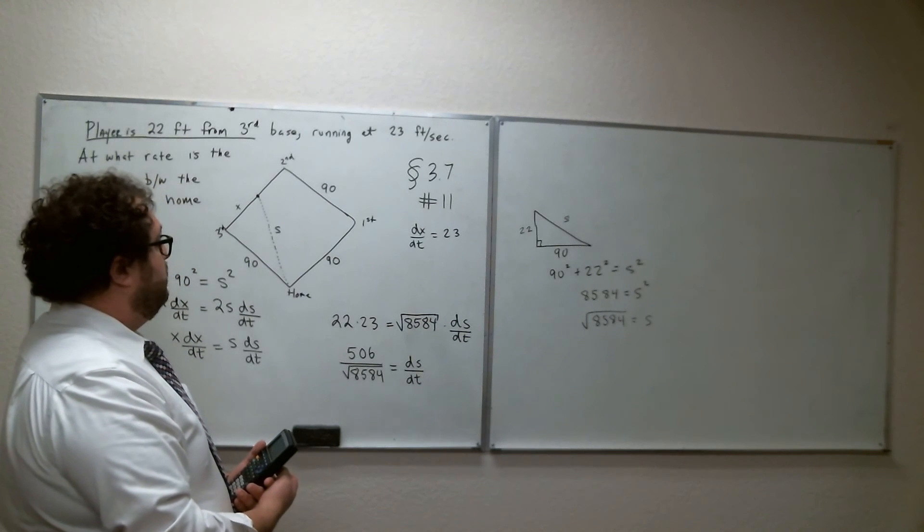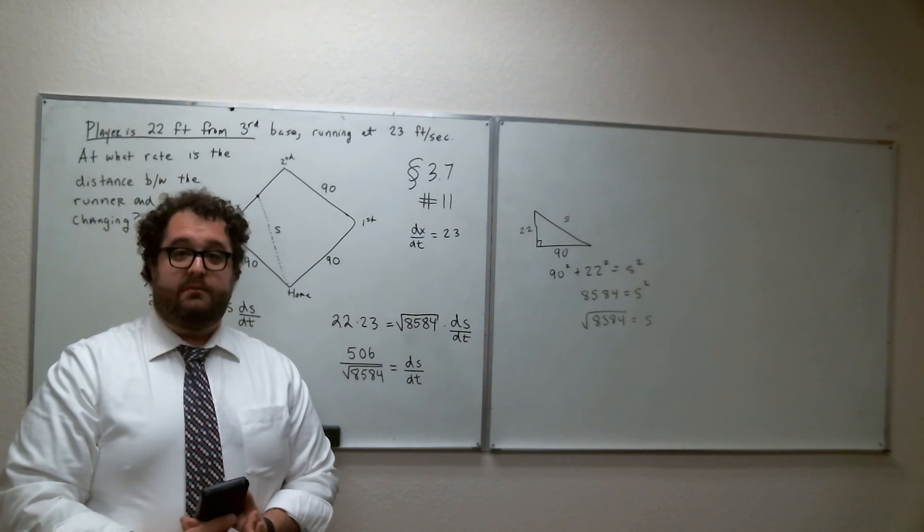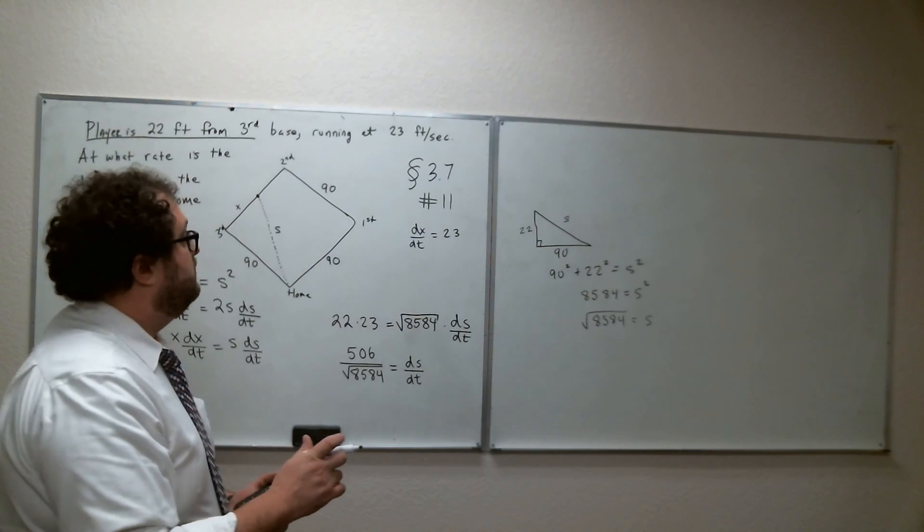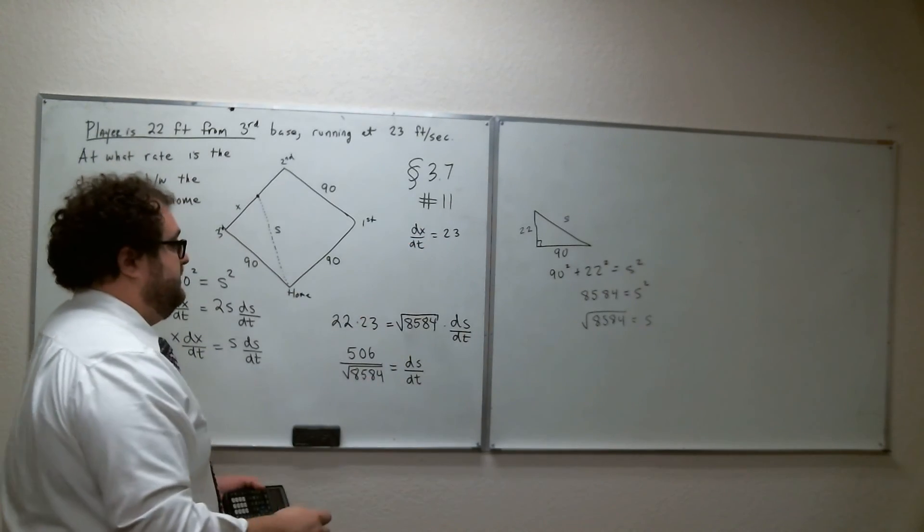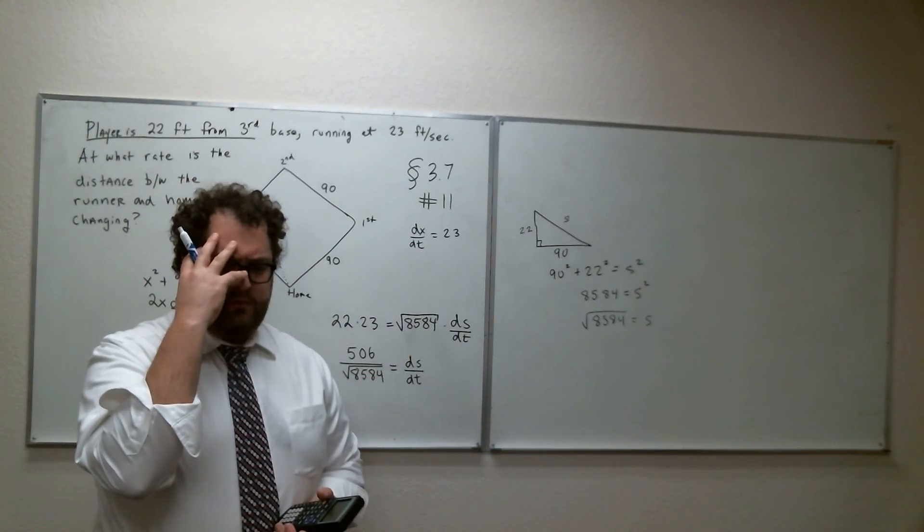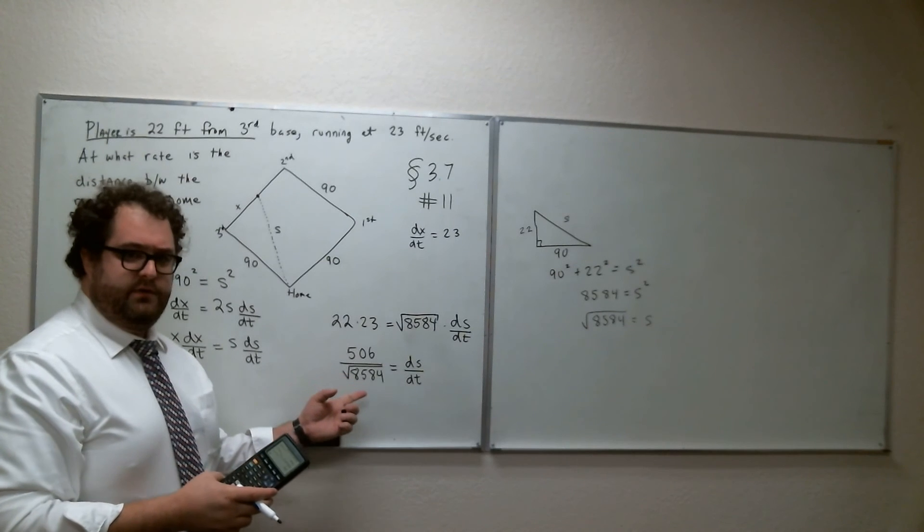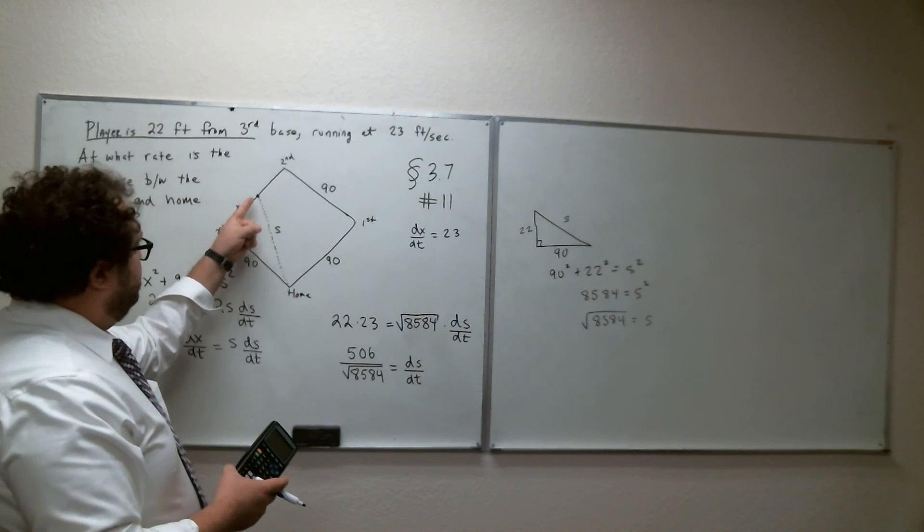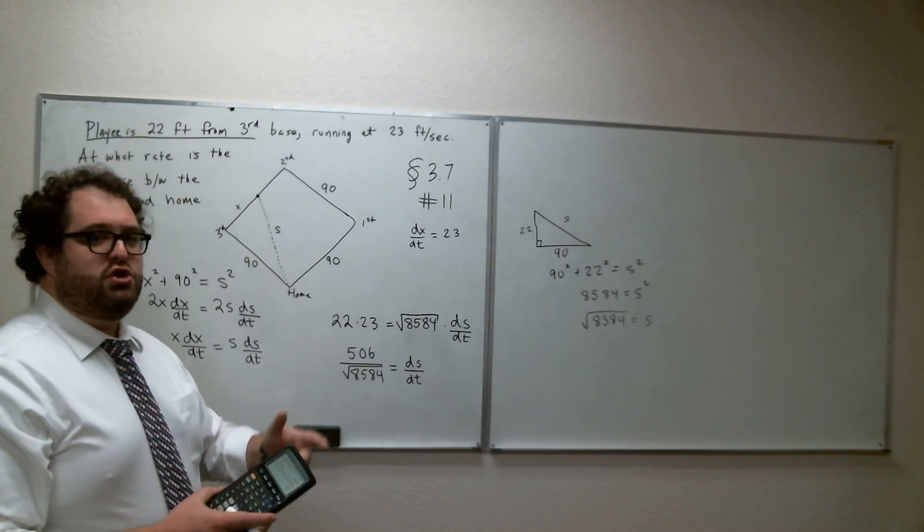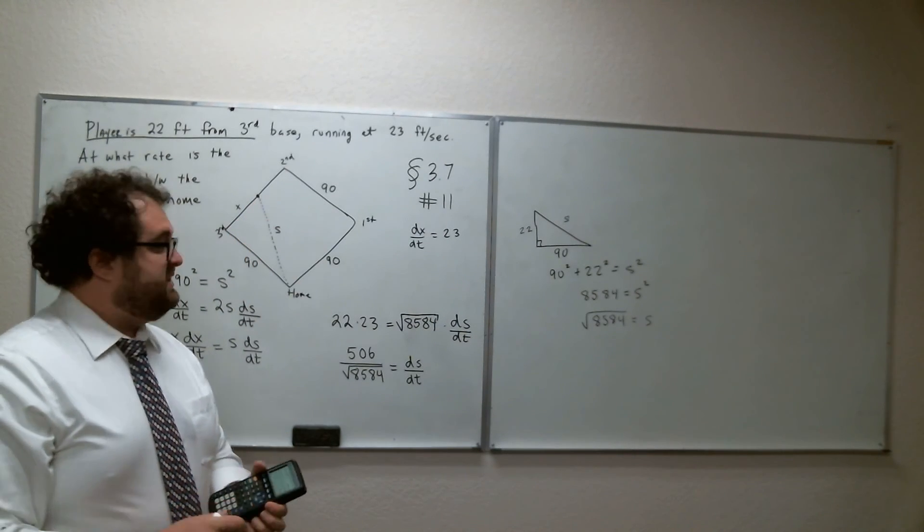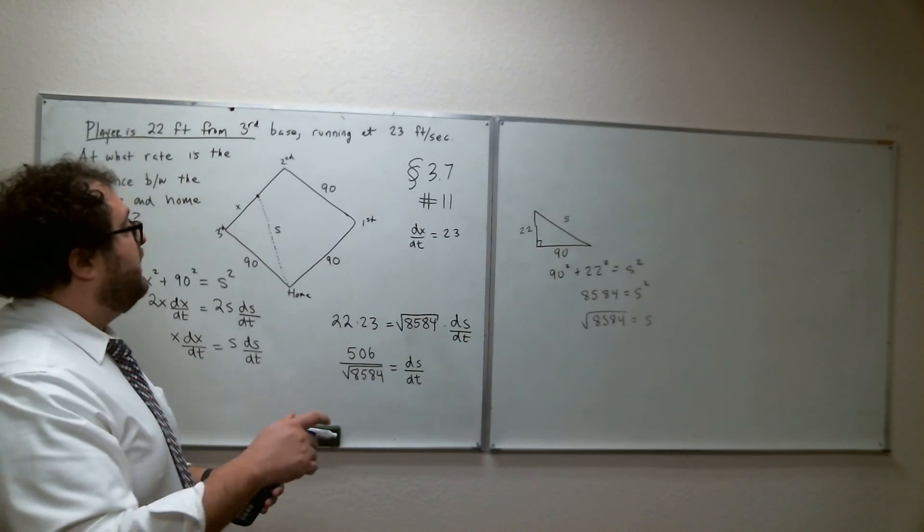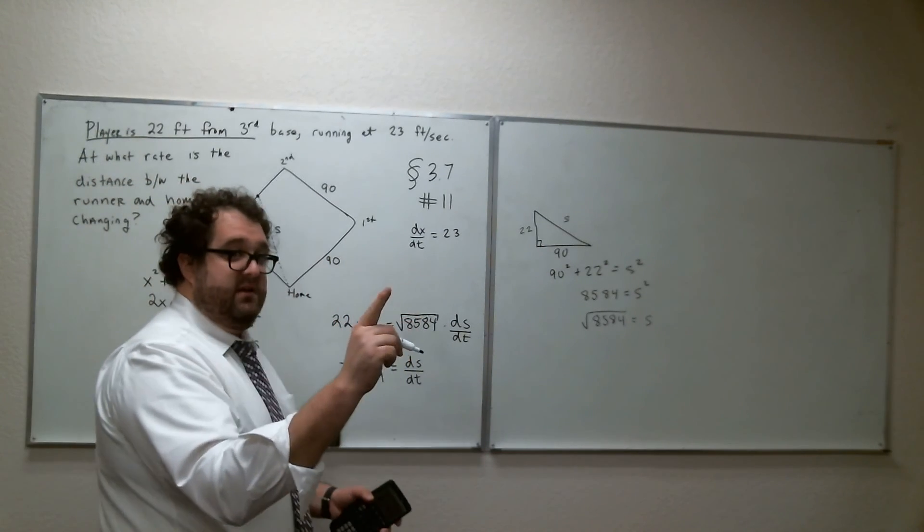Oh, you know what? I just realized I made a mistake. Just hit me. Going back here, DX/DT, I just thought about something. My answer is positive, okay? My answer is positive, but this distance is decreasing, so it should be negative, because S is getting smaller. So where did I go wrong? I went wrong right here.